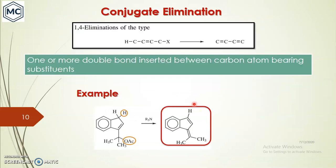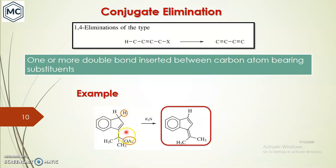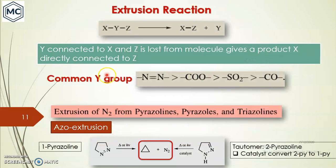The next topic is conjugate elimination, also called 1,4-elimination. In this type, hydrogen and the halogen are at the 1,4-positions, and two extra double bonds — one or more — are inserted between the carbon atoms bearing the substrate. An example: hydrogen and the leaving group are in the 1,4-position, and after elimination, a new double bond is formed.